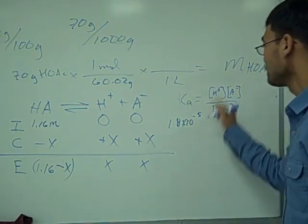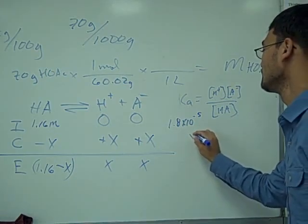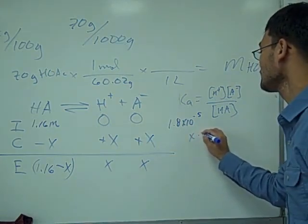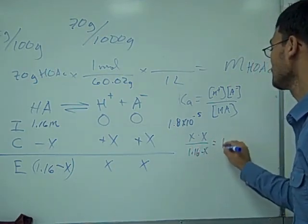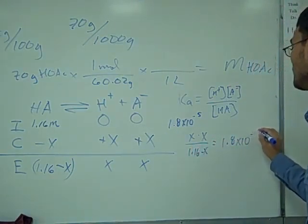Do a quick substitution and rearrangement. We can then work out that our x times x over 1.16 minus x is equal to 1.8 times 10 to the negative 5.